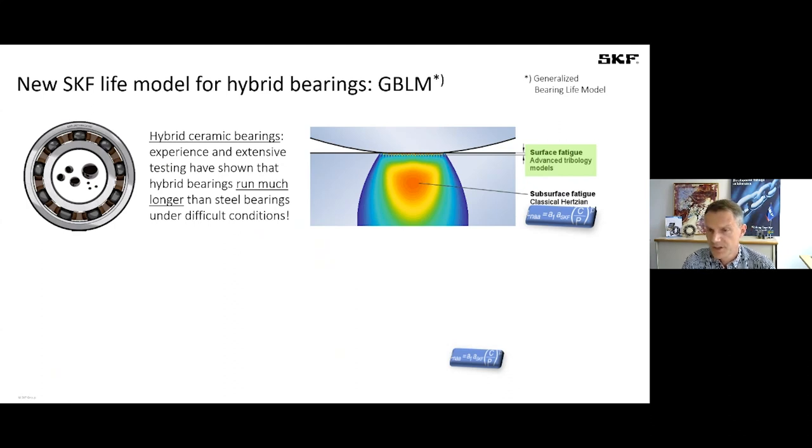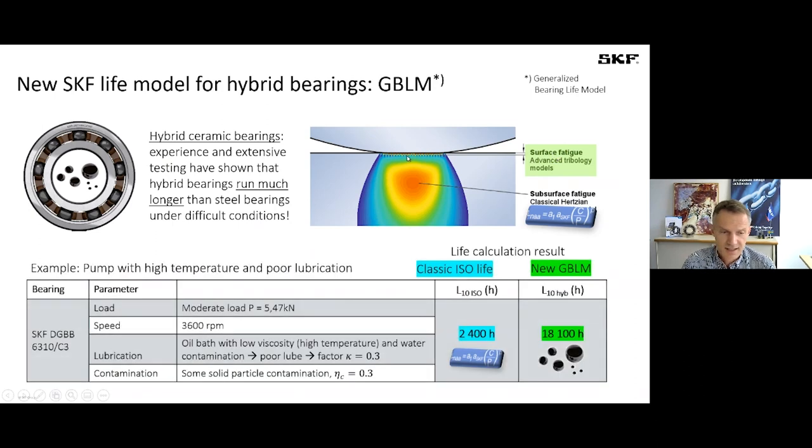And it's out there, it's in our tools, the tools I mentioned before. And it's taking into account not only the classical Hertzian subsurface fatigue, but the surface damage that can happen if you have very poor lubrication conditions. And just as an example here, without going into the numbers, for a tough case where bearing life according to the classic theory might be only 2400 hours when you calculate it, if you use the new life theory and you use hybrid bearings and you apply the data, you end up with a multiple of this classic life. And this is data that is verified by a lot of experiments and testing.